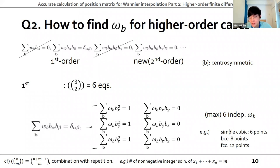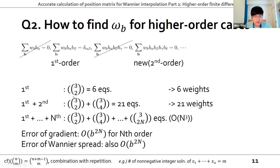For the second-order equation, we have a combination with repetition of four Cartesian indices, which is 15. So we have a total of 21 equations. In this manner, for the Nth order, the number of equations from first to Nth order is proportional to N cubed. When it comes to the error, the error of the gradient and Wannier spread is proportional to b to the 2N.